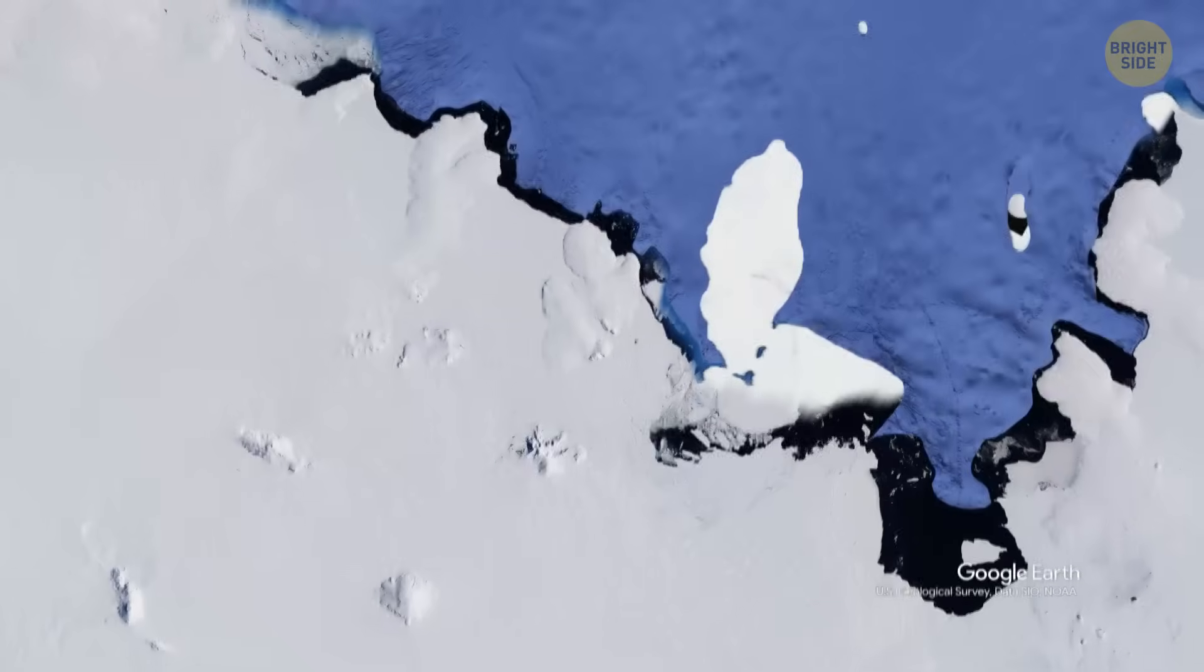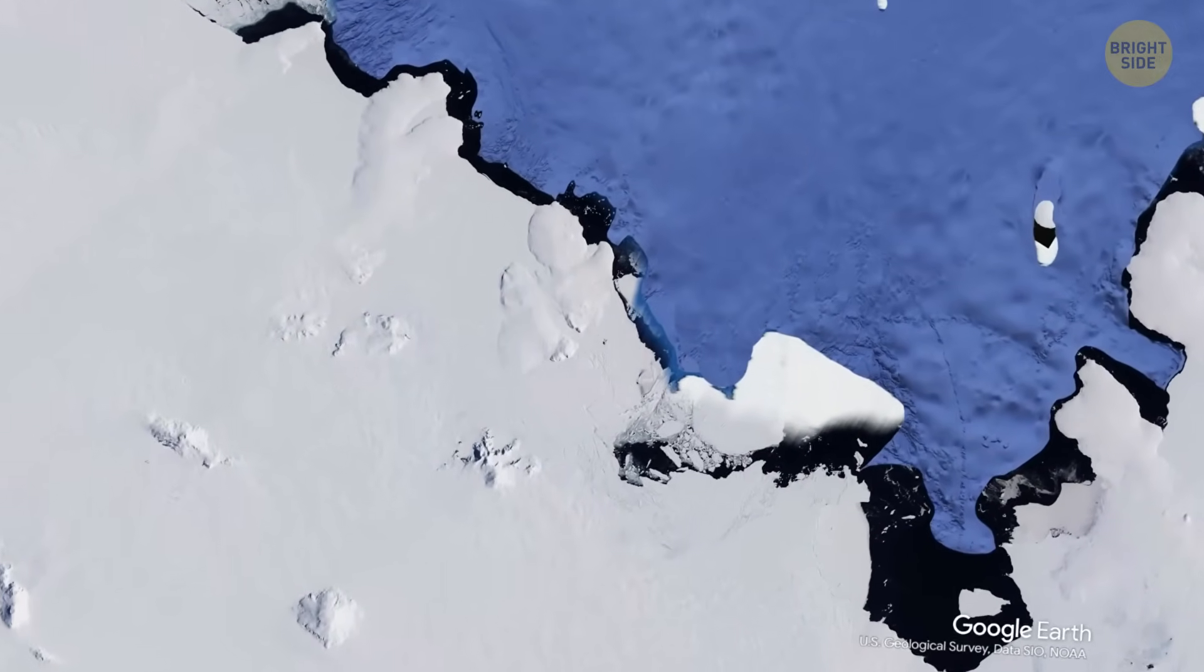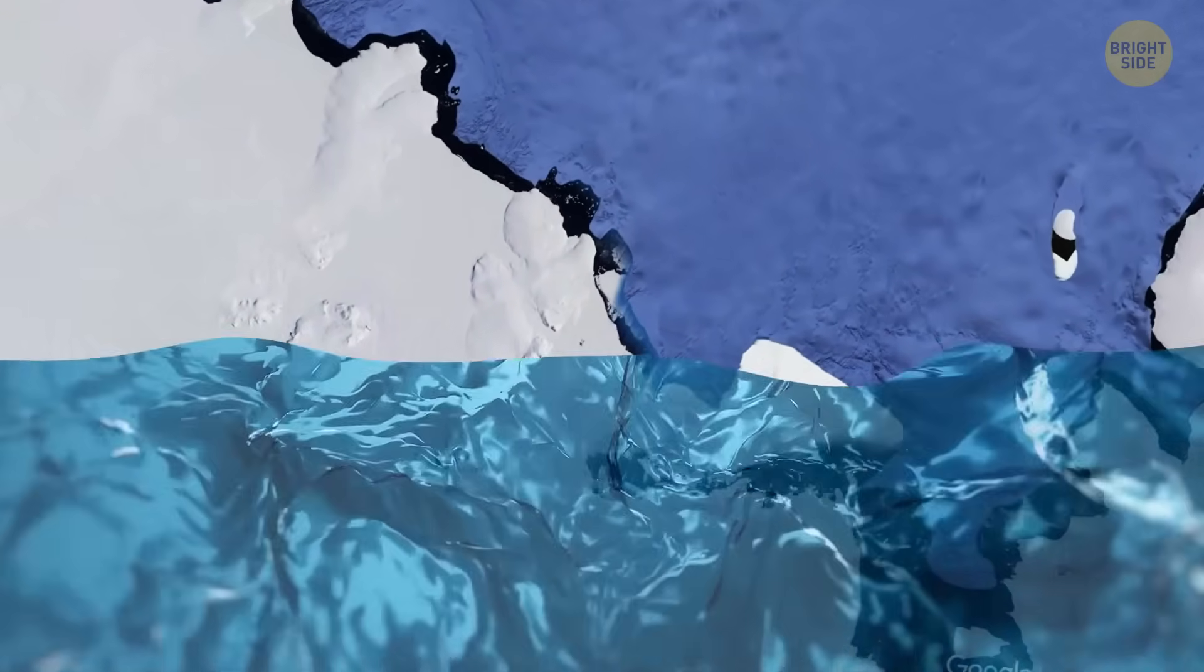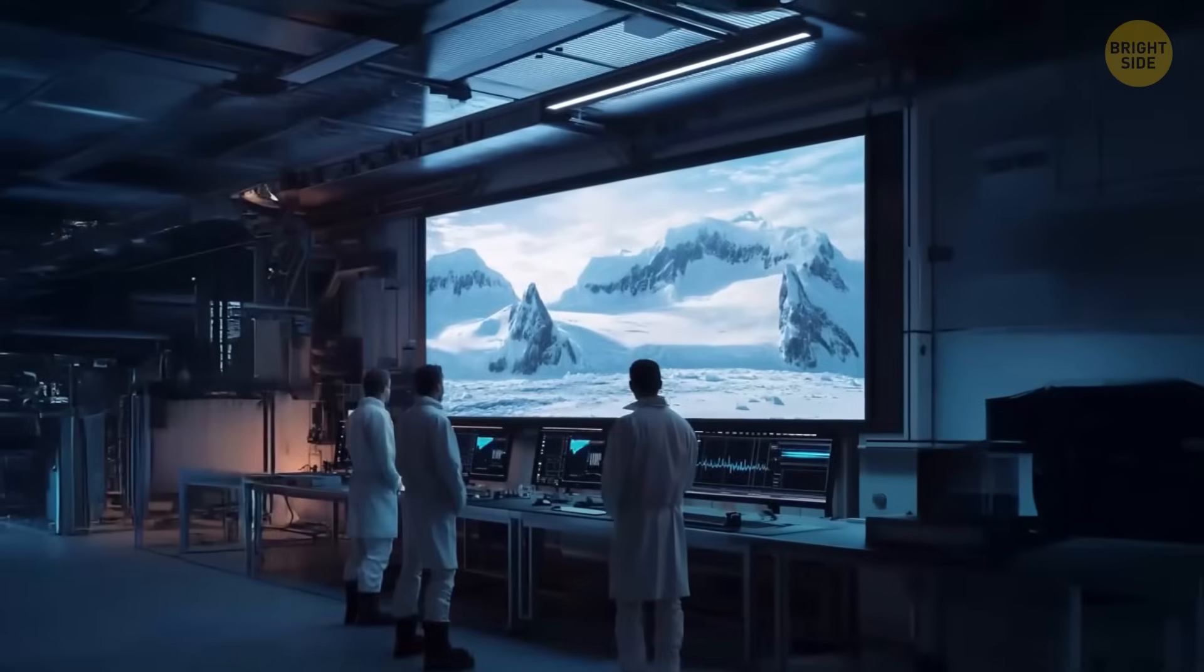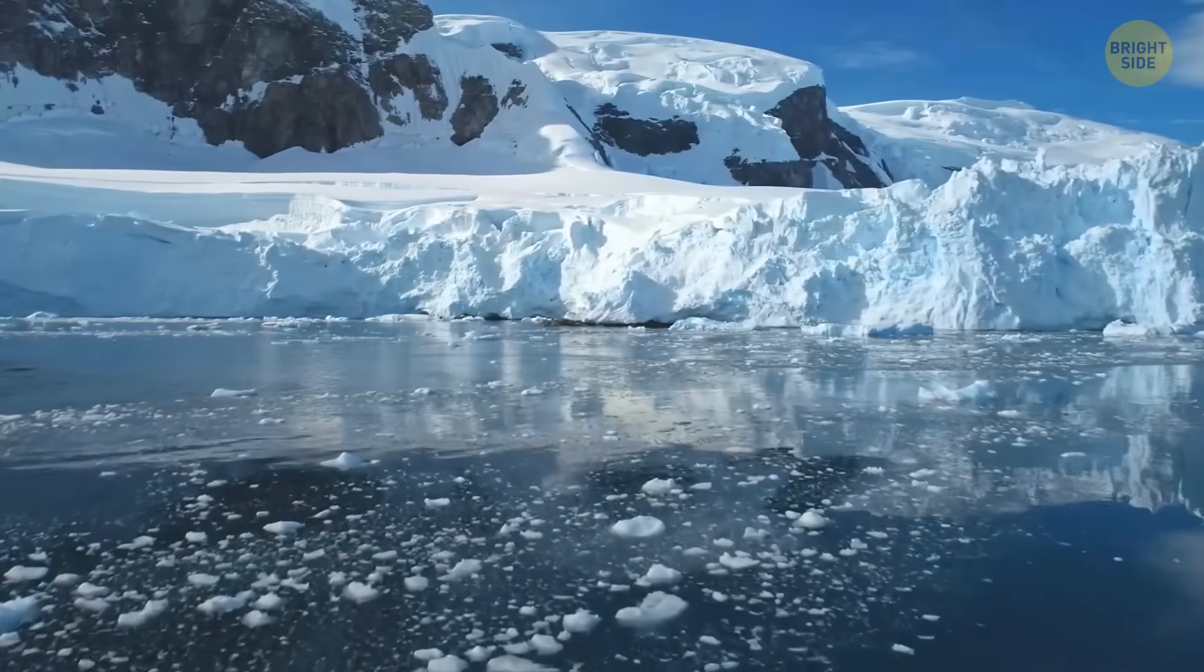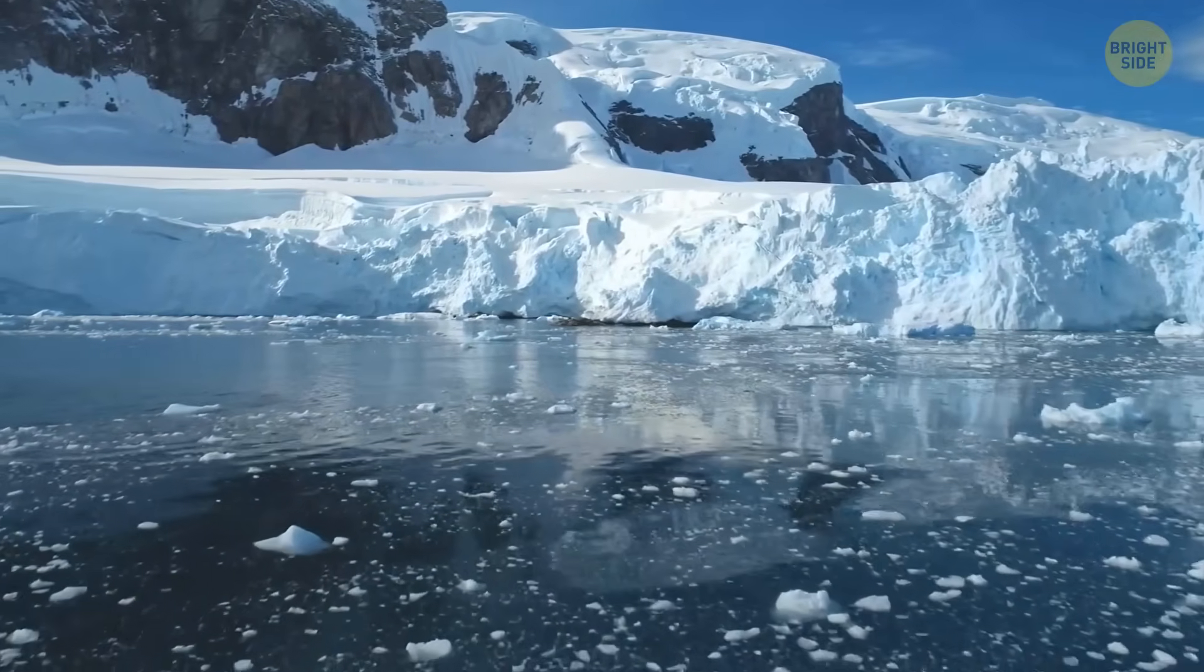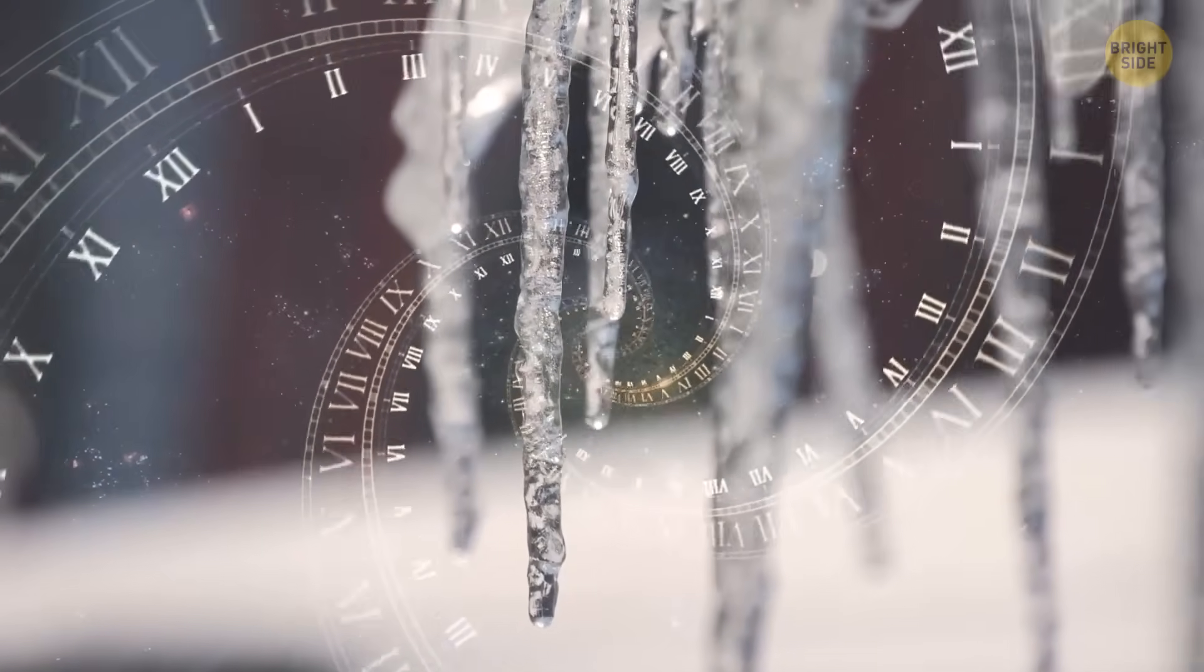If this guy melts away completely, the sea levels all around the world will increase by 2 feet, which might not sound like a lot, but it would be catastrophic for coastal areas. Luckily, researchers have found that even if its ice shelf were to collapse in the next 50 years, the glacier itself wouldn't retreat as quickly as they feared. It's still losing ice rapidly, but it would be quite a slow process.